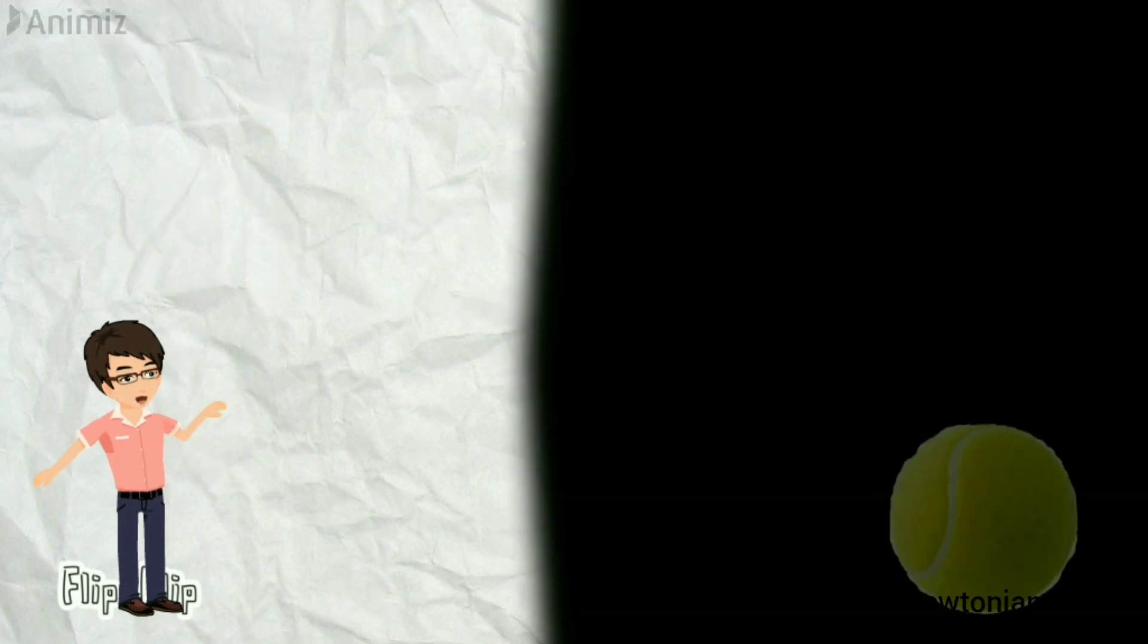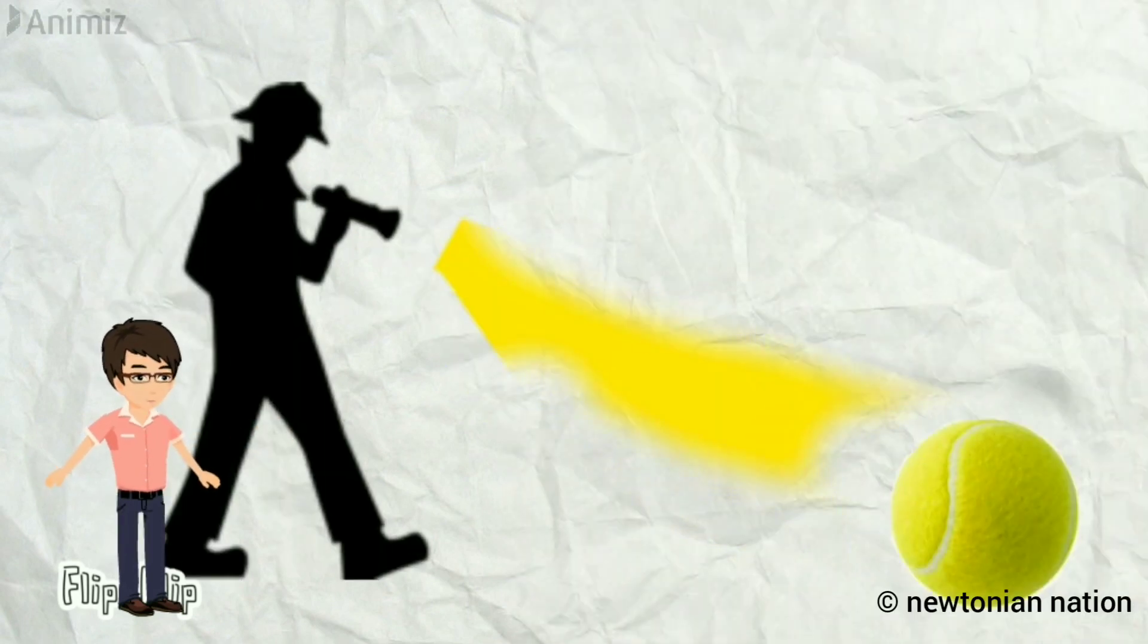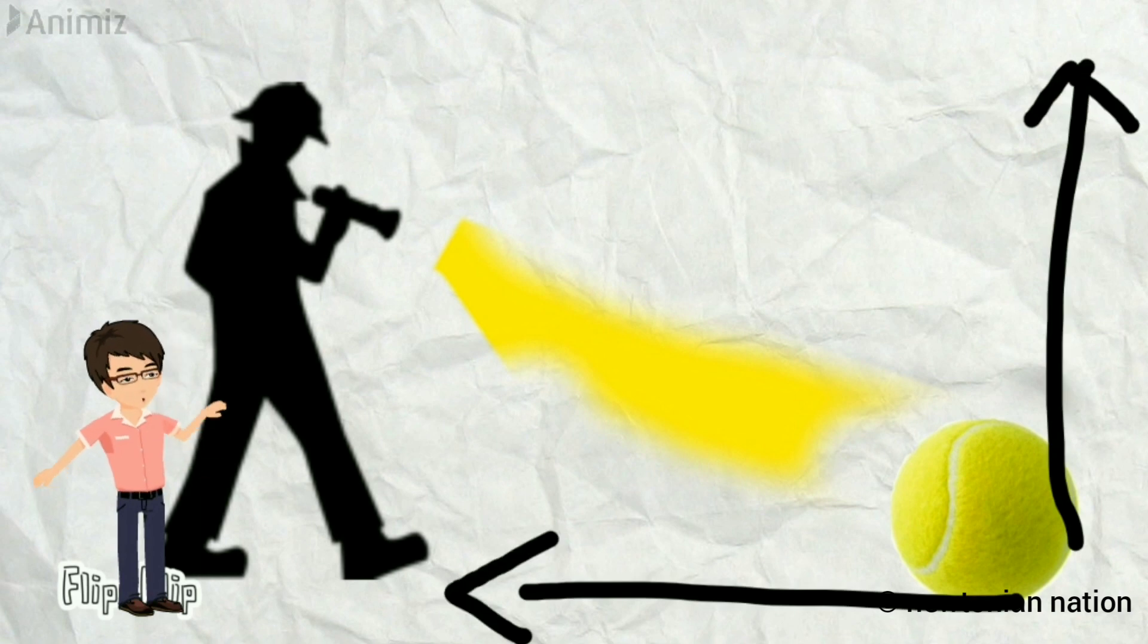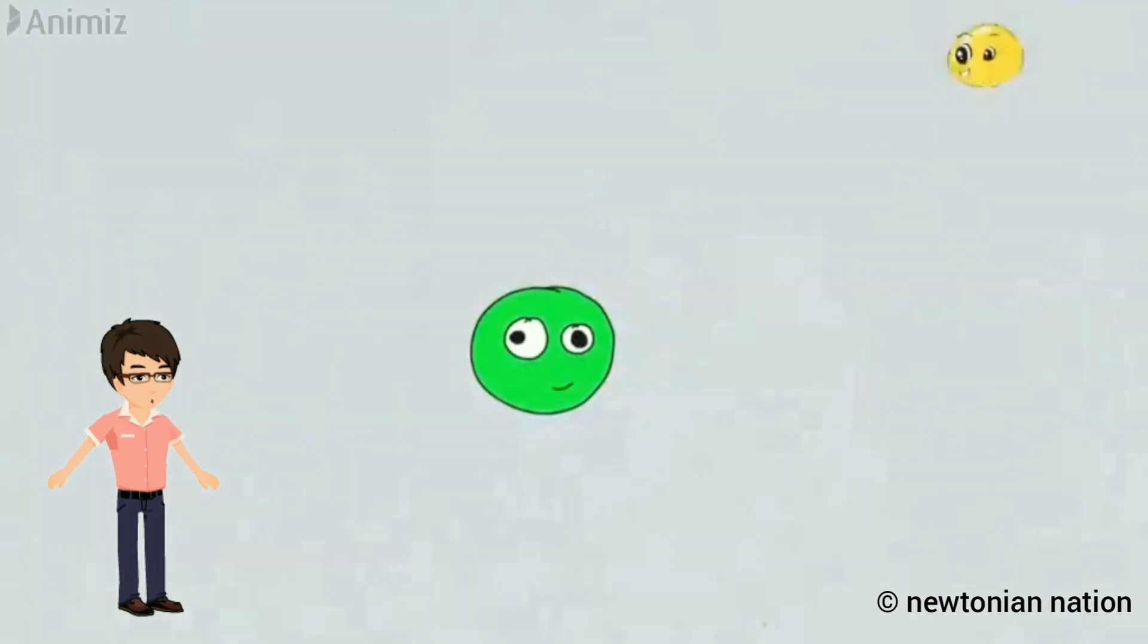The most direct way of measuring where something is to shine light on it. And from the reflected light, we can calculate his position. So, he fired a photon on an electron to figure out the position of an electron. But, the electron moved away because the photon has high energy.